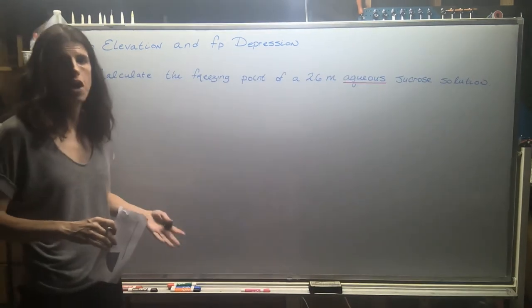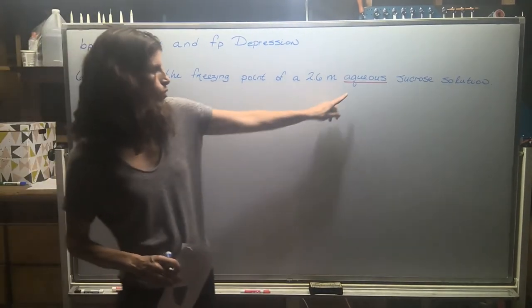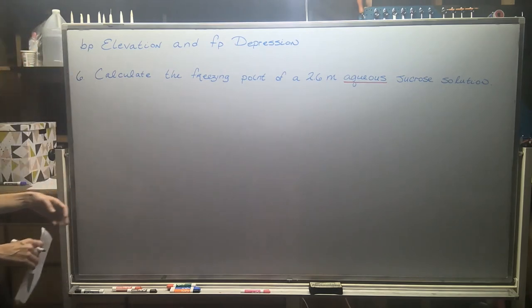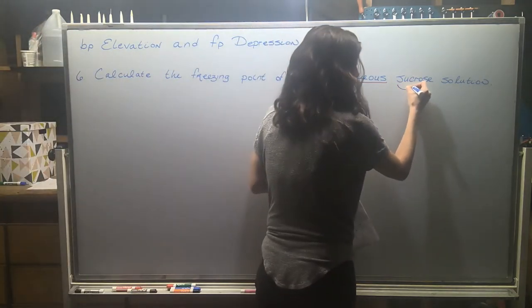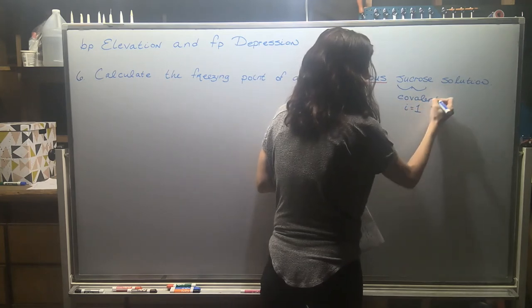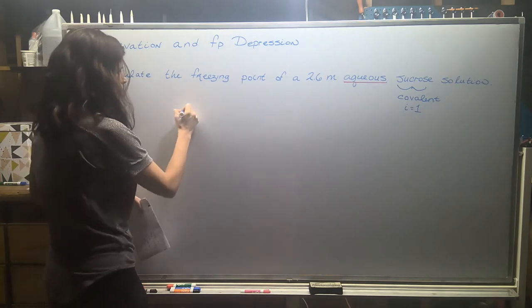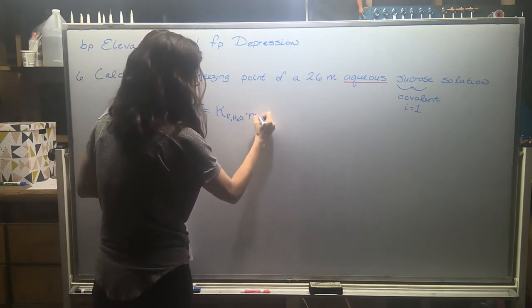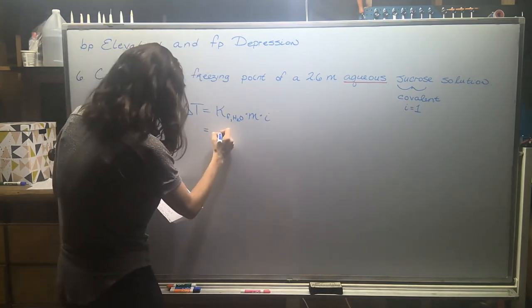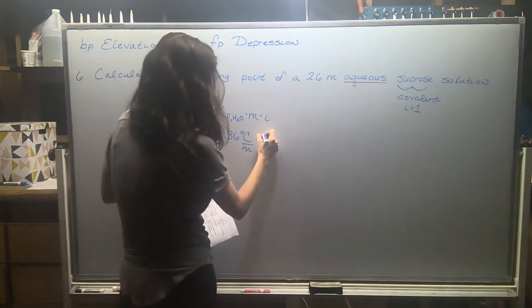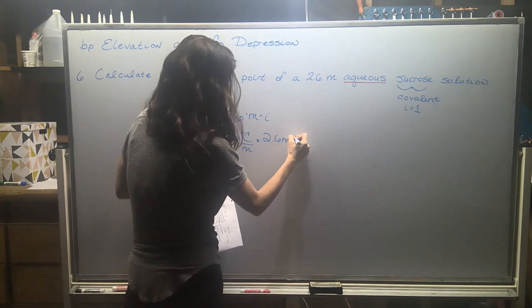Alrighty, so for this problem here, I wasn't entirely satisfied with the details that were provided. So I threw in the word aqueous. It's really important that we know the identity of the solvent when we're doing freezing point depression or boiling point elevation problems. So here, we have a 2.6 molal aqueous sucrose solution. So sucrose is a sugar. It's covalent. It just has carbon, hydrogen, and oxygen. So we know that its Van't Hoff factor is going to be equal to 1. So we have the formula delta t equals kf. And we're going to use the kf value for water times the molality of the solution times I. So I'll do 1.86 degrees Celsius divided by molal. They gave us the molality. So we'll plug in 2.6 and then the 1 if we want to put it.